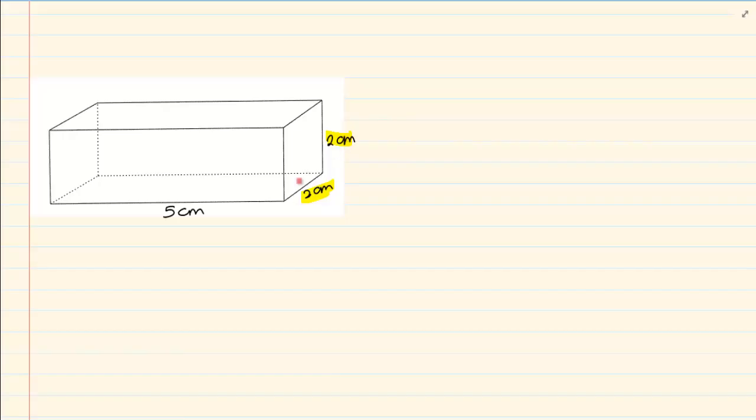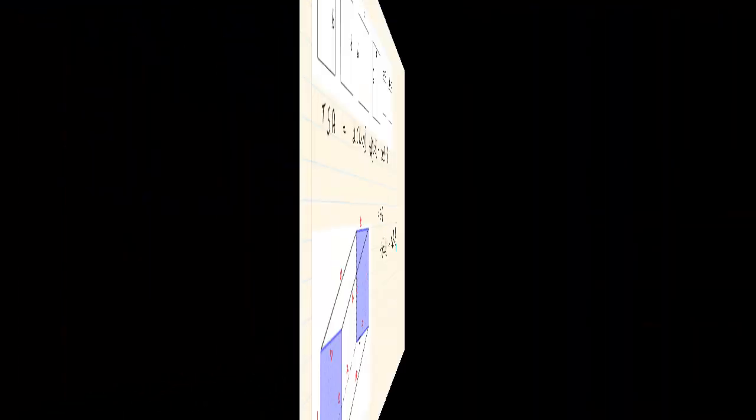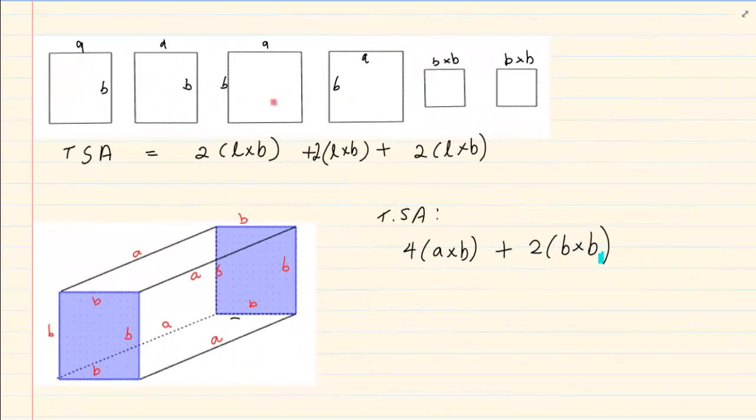So when we are using a square base then we know we are going to have two length times breadth plus four length times breadth. Now we had discussed this type of surface area in our previous videos. This was where we had discussed that the bases are squares.